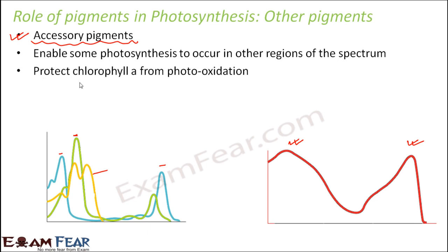Accessory pigments also protect chlorophyll A from photooxidation. Since chlorophyll A is the main pigment for photosynthesis, it is very important to ensure its protection. Chlorophyll A has a tendency to get oxidized in the presence of light, so these accessory pigments help protect chlorophyll A from being photooxidized. So these other pigments perform two roles: they help some photosynthesis to happen between the red and blue regions of the spectrum, and they help in the protection of chlorophyll A from photooxidation.